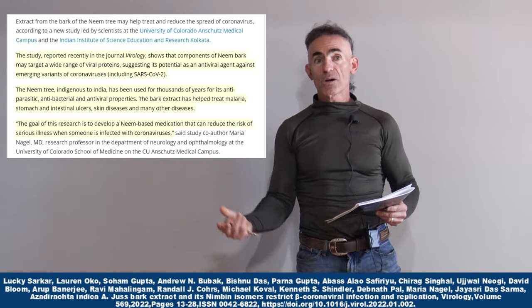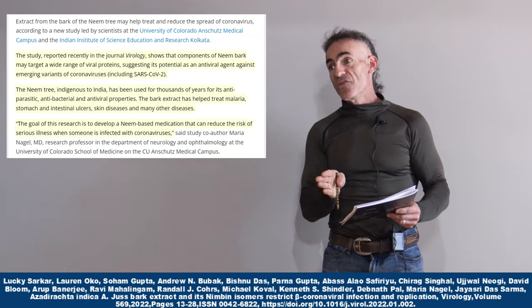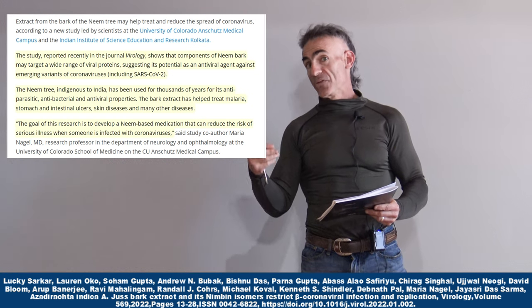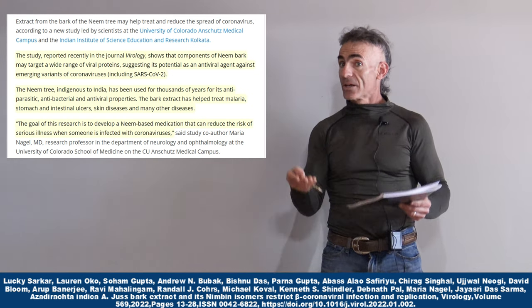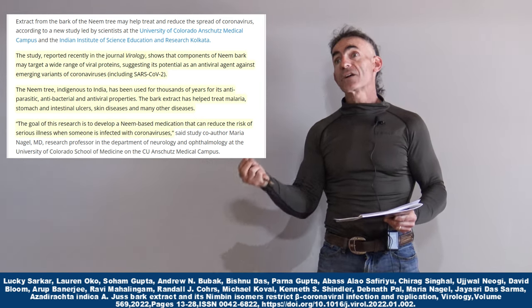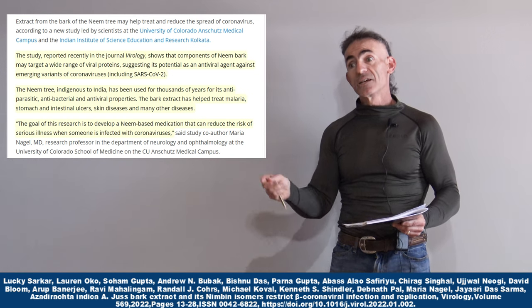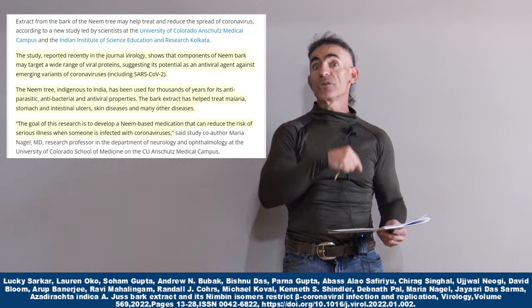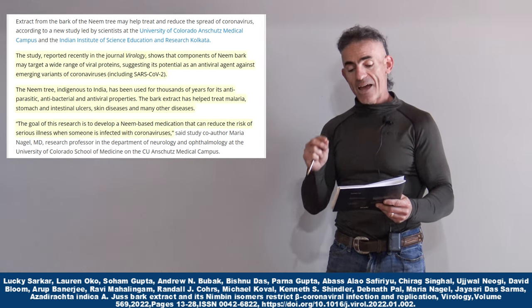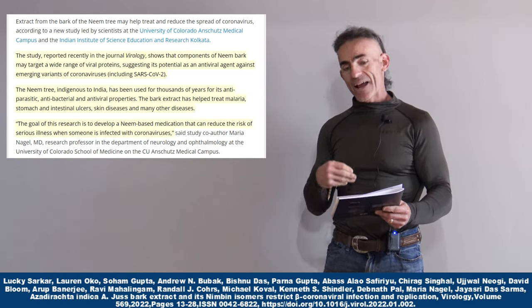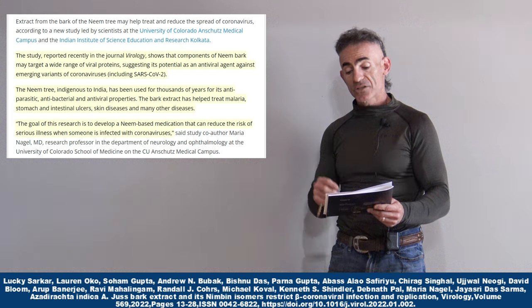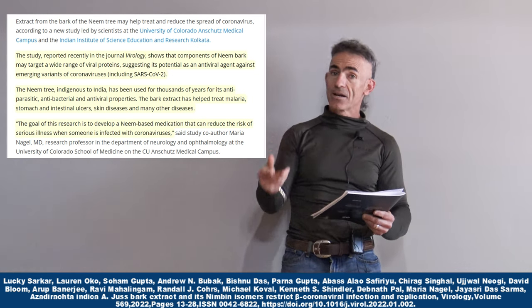Instead of waiting for a variant to emerge, addressing the threat, and then working towards antibody treatments or new vaccines, they want to take something already commonly available in the plant neem and see if this can address all of the common denominators in particular variants and therefore help mitigate any potential negative outcome. The study reported that the neem tree indigenous to India has been used for thousands of years for its antiparasitic, antibacterial, and antiviral properties. The bark extract has helped treat malaria, stomach and intestinal ulcers, skin diseases, and many other diseases.